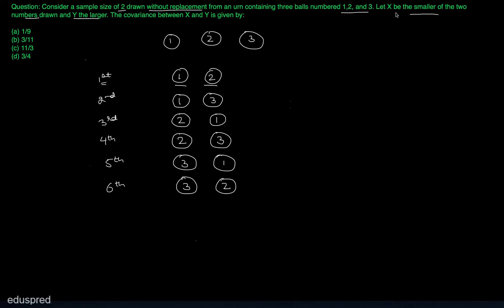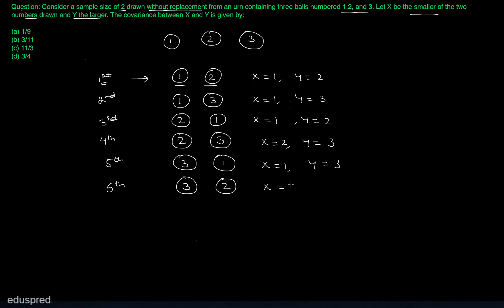Now we are given that X is the smaller of the two numbers and Y is the larger. So for outcome (1,2), X takes the value 1 and Y takes the value 2. For (1,3), X is 1 and Y is 3. For (2,1), X is 1 and Y is 2. For (2,3), X is 2 and Y is 3. For (3,1), X is 1 and Y is 3. For (3,2), X is 2 and Y is 3. So the possible values of X are only 1 and 2, and the possible values of Y are 2 and 3.